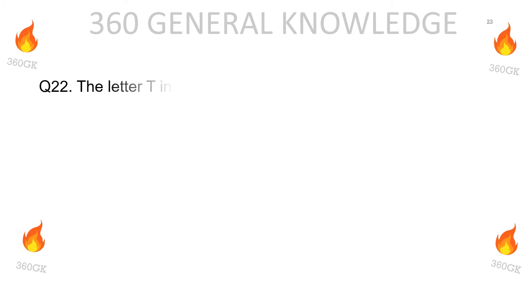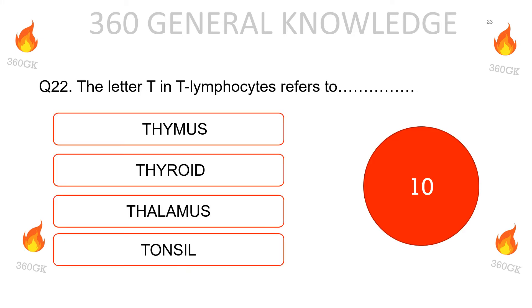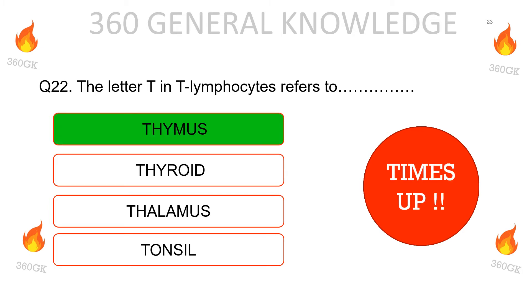The letter T in T-lymphocytes refers to: thymus, thyroid, thalamus, or tonsil. The correct answer is thymus.